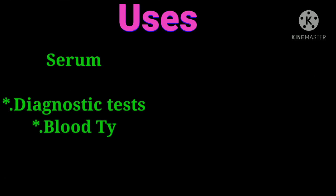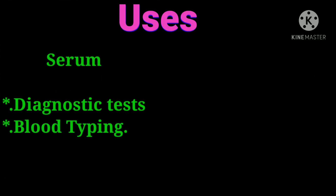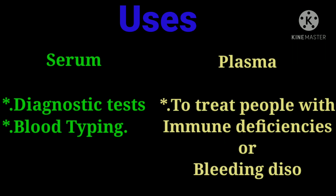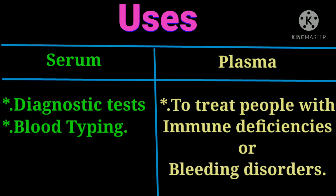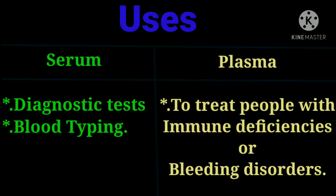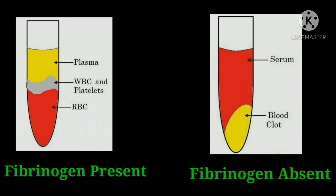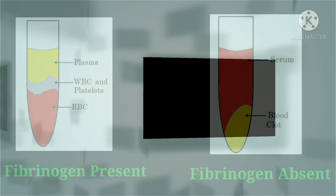Uses of serum and plasma: Serum is mostly used in various diagnostic tests and blood typing. Plasma is mostly used to treat people with immune deficiencies or bleeding disorders. I am concluding this video here — see you soon in my next video. Thank you friends.